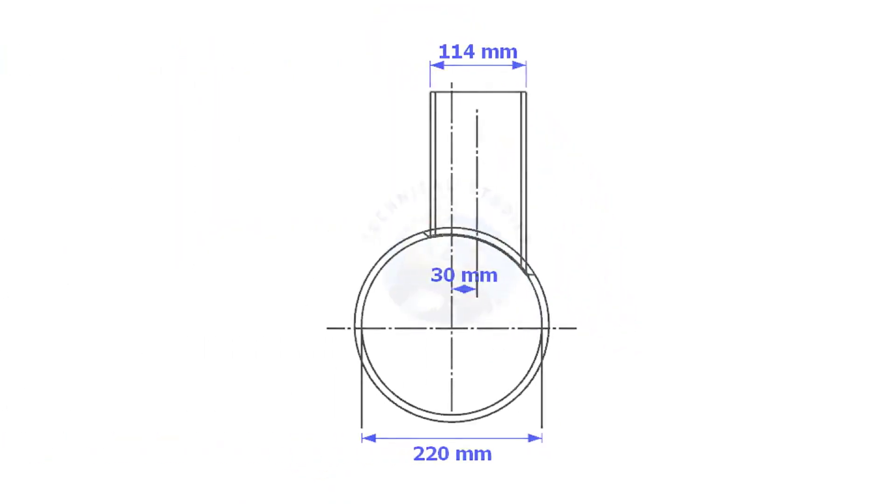Always consider the inside diameter of the header when you want to lay out the branch. Here, the header ID is 220 mm, the branch OD is 114 mm, and the offset is 13 mm.